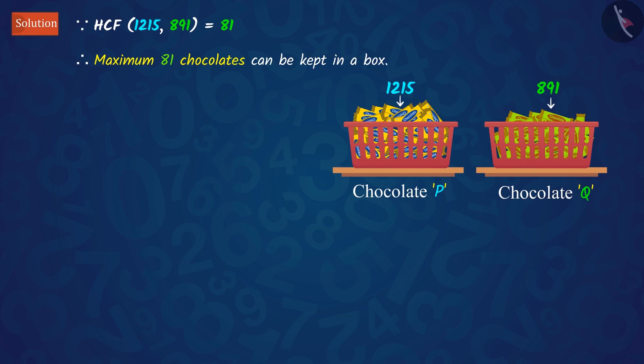So maximum 81 chocolates can be kept in the box out of chocolate P and chocolate Q. Since we have to find the minimum number of boxes required, can you tell what we have to do in order to find this?